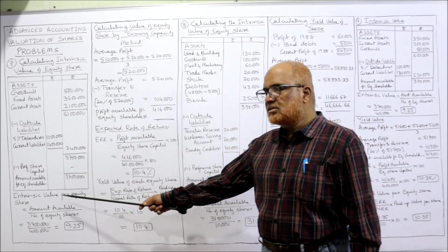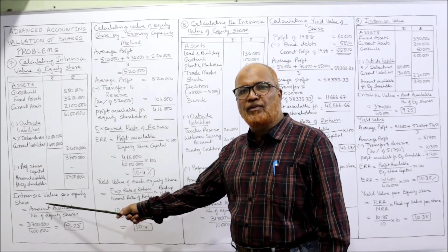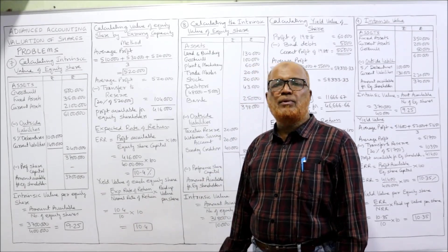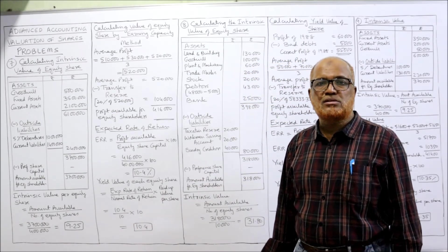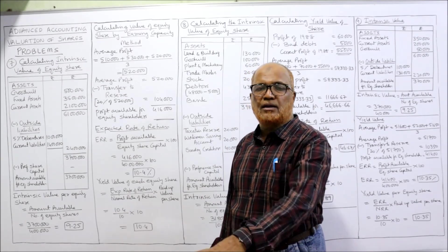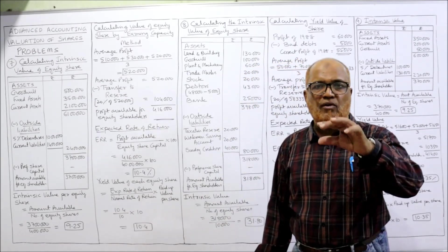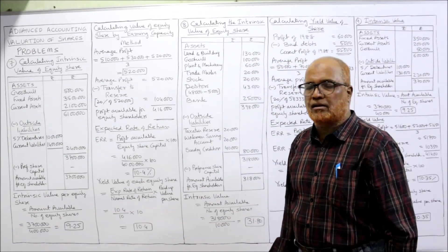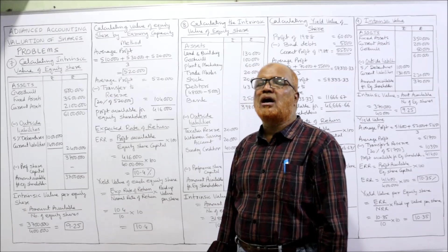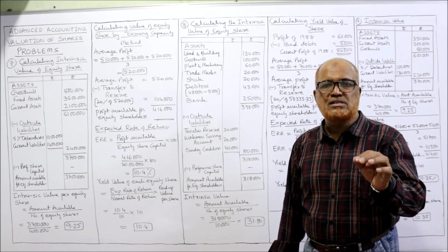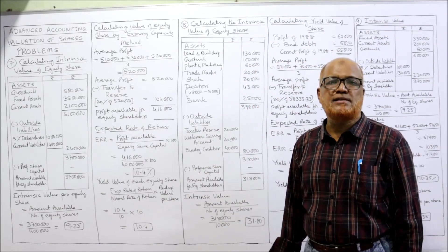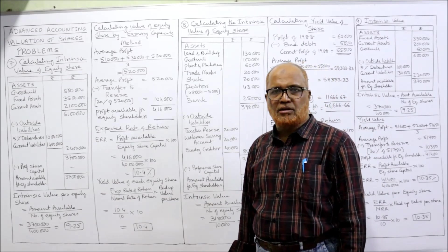Then 37 lakh is the amount available for equity shareholders or net assets. Now we can simply substitute in the formula: intrinsic value of equity shares = amount available ÷ number of equity shares. Number of equity shares given: 4 lakh. So 37 lakh ÷ 4 lakh = 9.25. This is the intrinsic value of equity share.